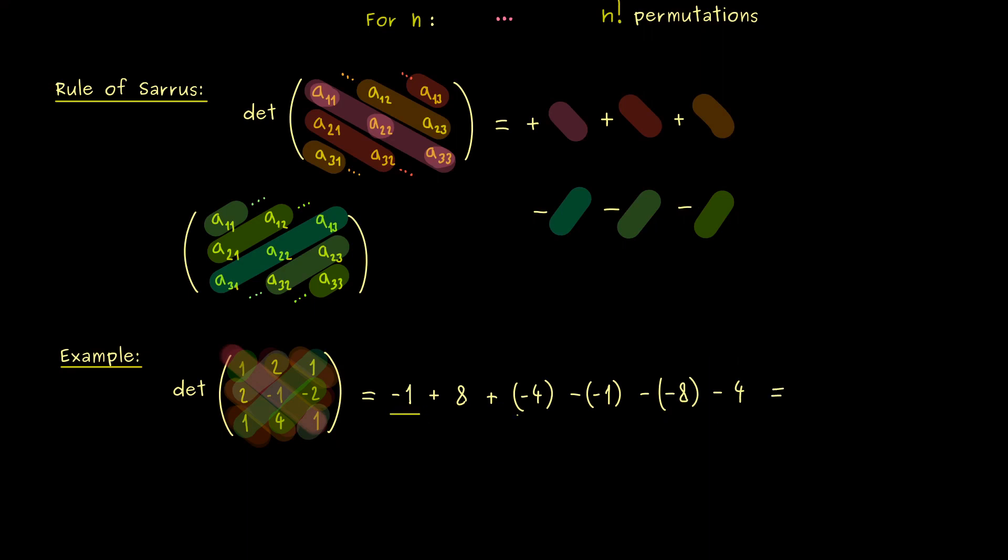So you see, we are finished and in the last step we simply have to put everything together. However, you see these terms here already cancel. Hence, only 8 remains and this is our determinant of our 3 times 3 matrix here. Therefore, you should see by remembering the Rule of Sarrus, calculating a 3 times 3 matrix is simply applying a simple recipe. You don't need to remember the whole Leibniz formula for that.